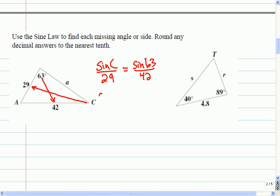So I could rearrange this, the sine of C is 29, sine of 63, all divided by 42. That gives me, let's see here, sine of 63 divided by 42, that gives me about sine of C, all divided by 42, is 0.62.